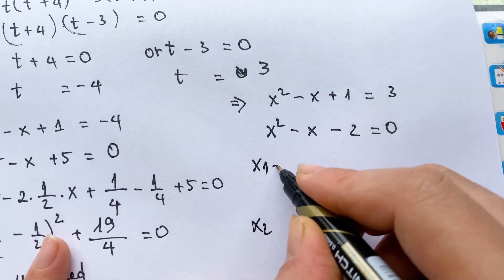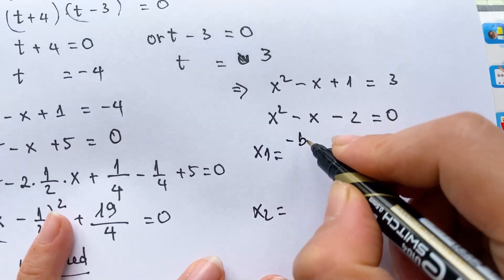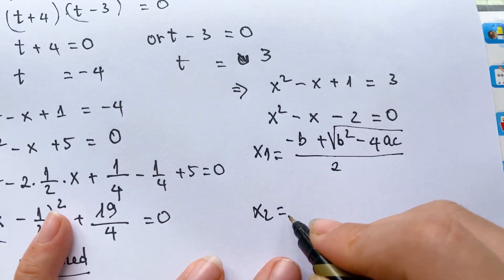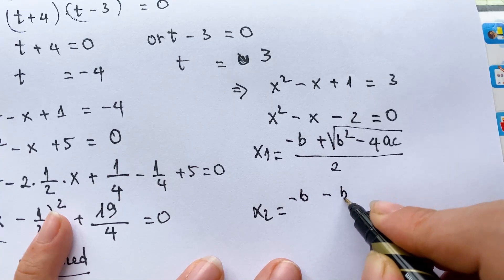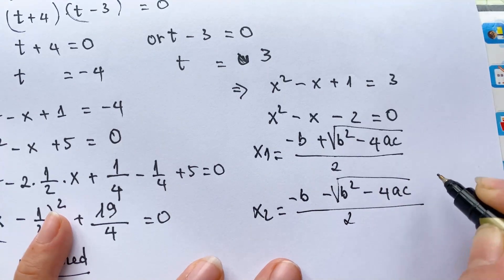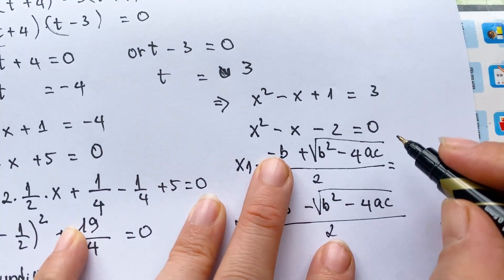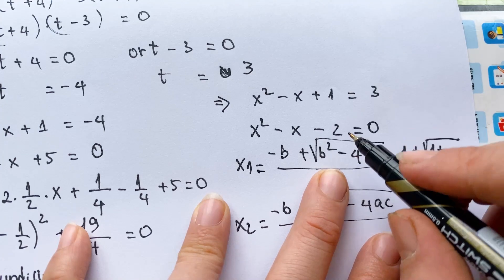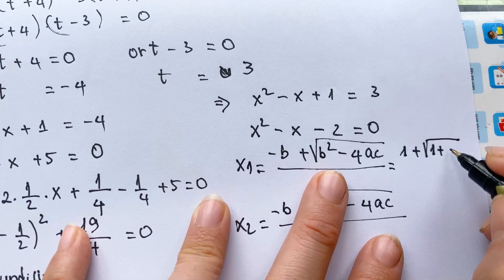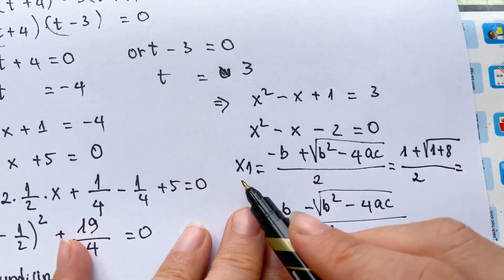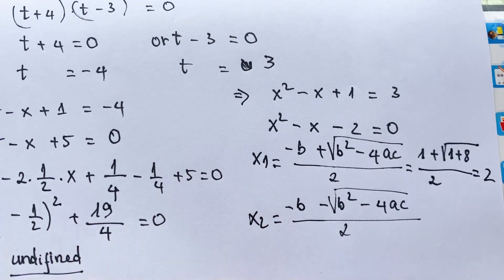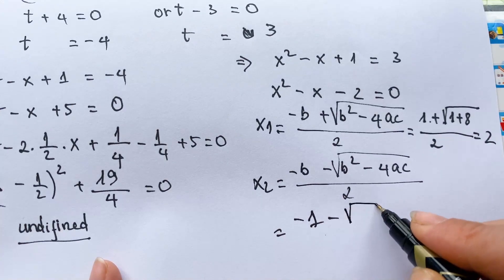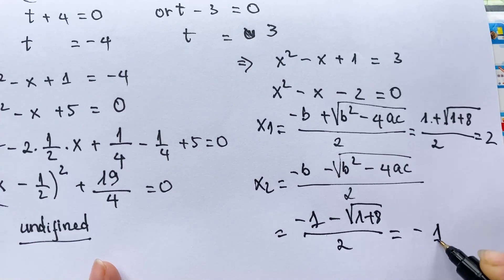We have x1 and x2. For x1, using the quadratic formula: minus b plus square root of b squared minus 4ac over 2. And x2 equals minus b minus square root of b squared minus 4ac over 2. So we get minus 1 plus square root of 1 plus 8 over 2, giving x1 equals 2. And x2 equals minus 1 minus square root of 9 over 2, giving x2 equals minus 1.